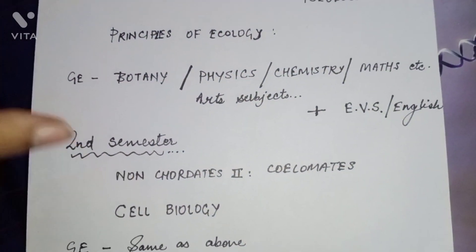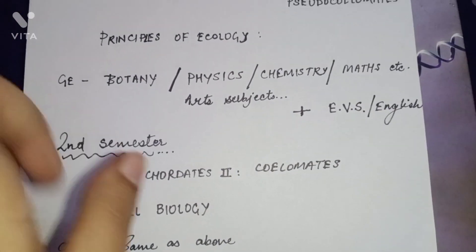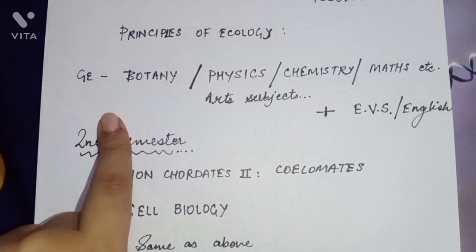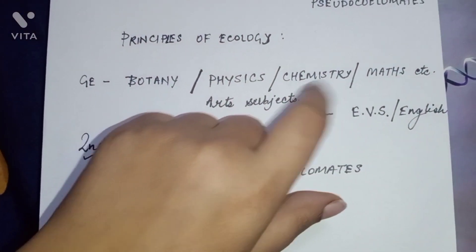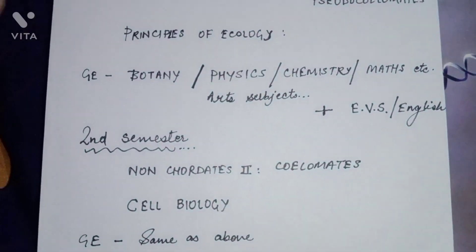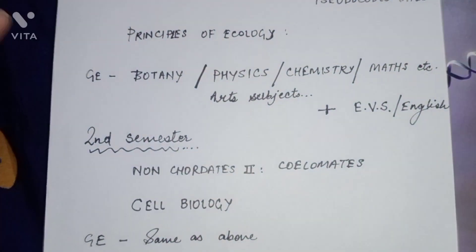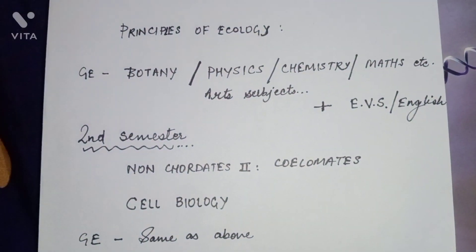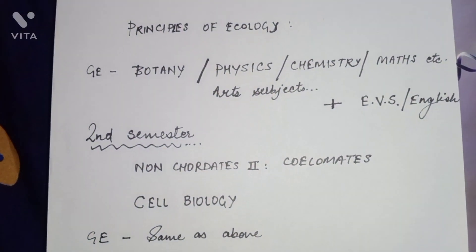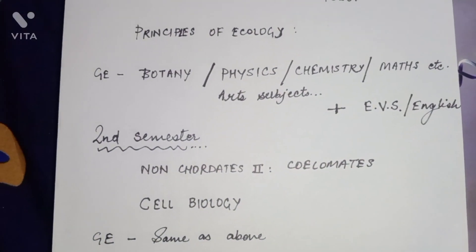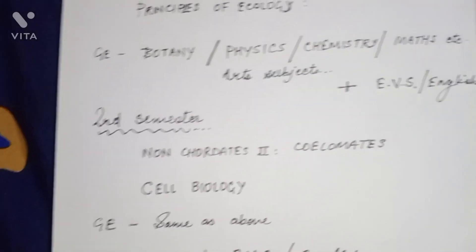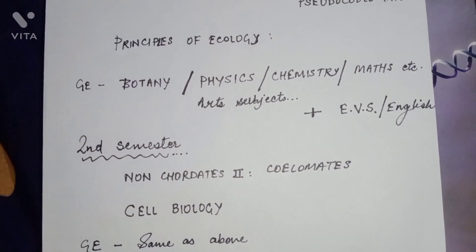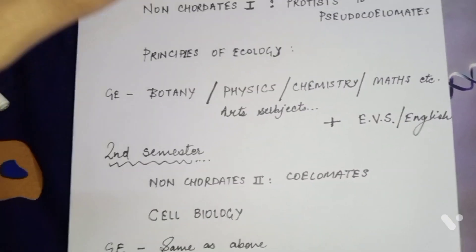GE is our general elective subject. It depends on what you choose — Botany, Physics, Chemistry, Maths, anything you want. Like if you want Political Science, you can also opt for that. And for the language subject, English or Hindi, whatever you want.